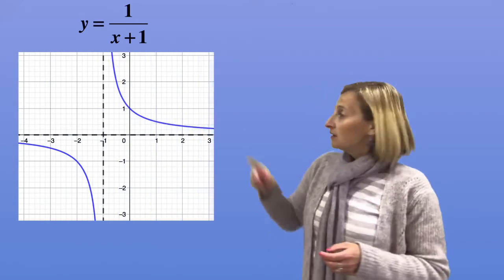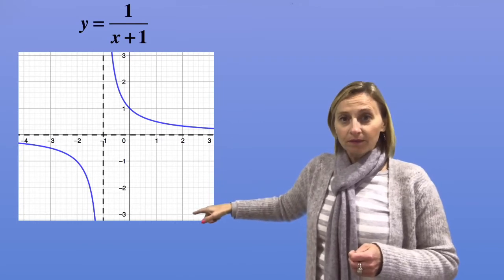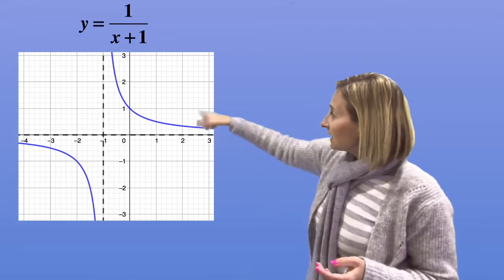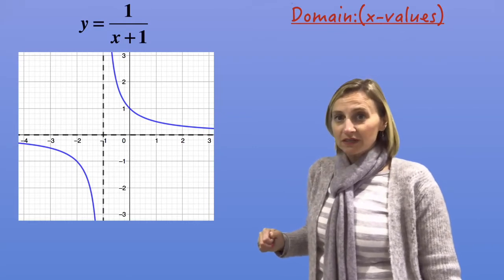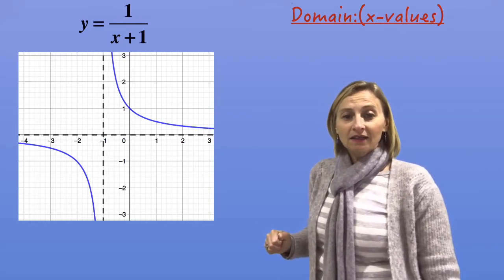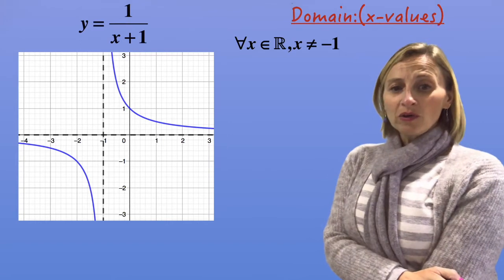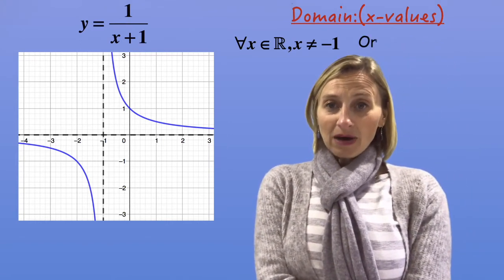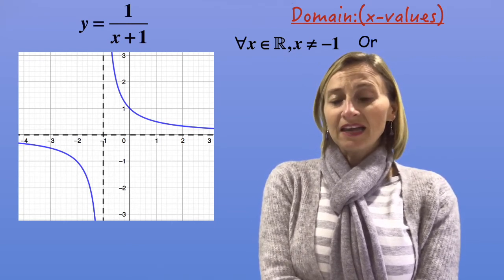Let's take a look at a hyperbola: y equals 1 over x plus 1. Here we have a hyperbola. We know that x can't equal negative one — that's our asymptote. So basically x can be anything except x can't equal negative one, right? So we can write: for all x is an element of the real numbers, except x can't equal negative one. Or you can write 'all real x, x can't equal negative one'. You can write the word 'except' if you want to as well.